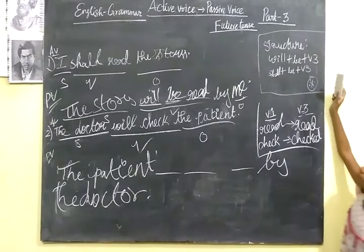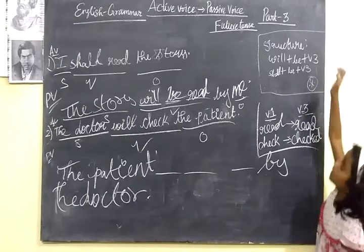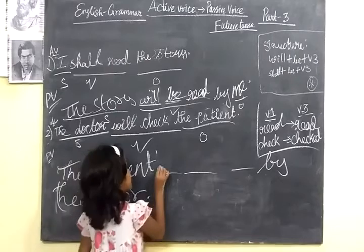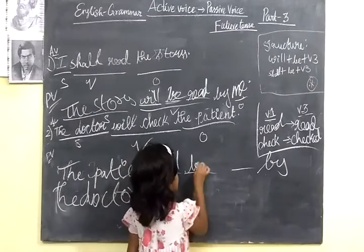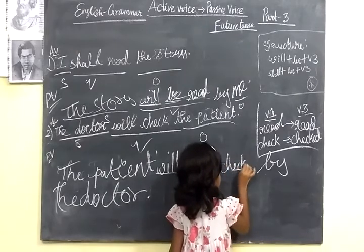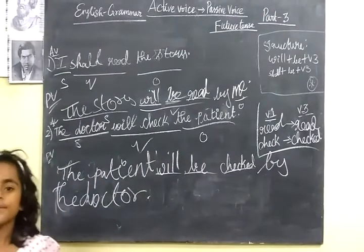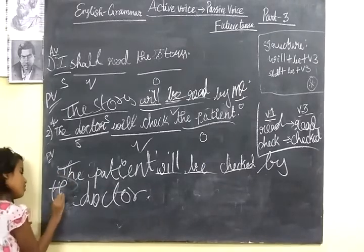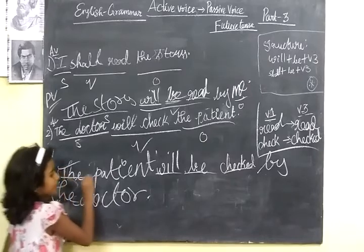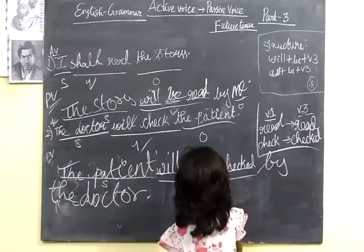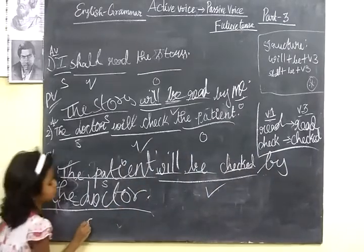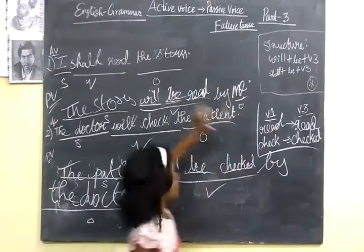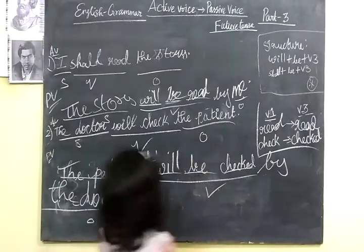To summarize: for first person, we use 'shall'; for third person, we use 'will.' The passive voice sentences are: one — 'A story will be read by me'; and two — 'The patient will be checked by the doctor.' Thank you.